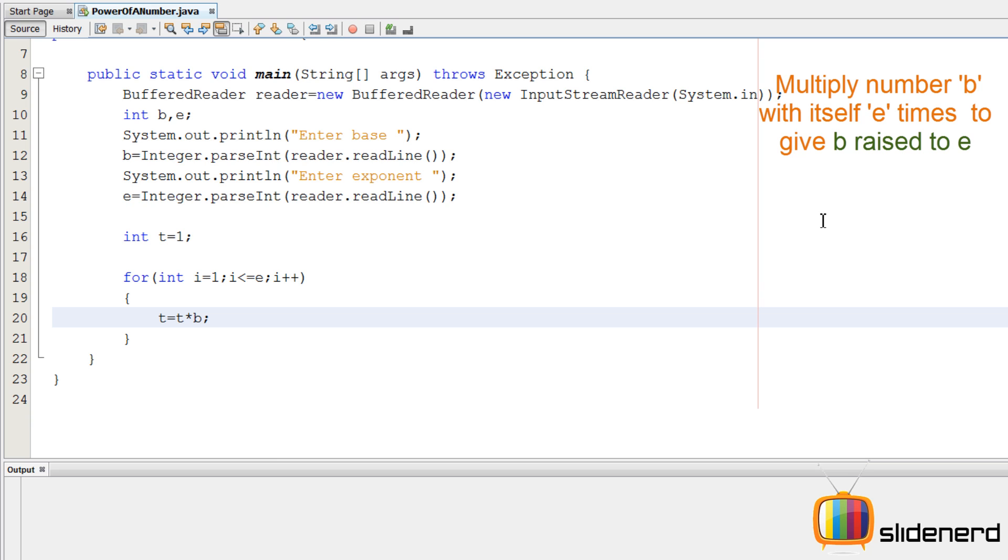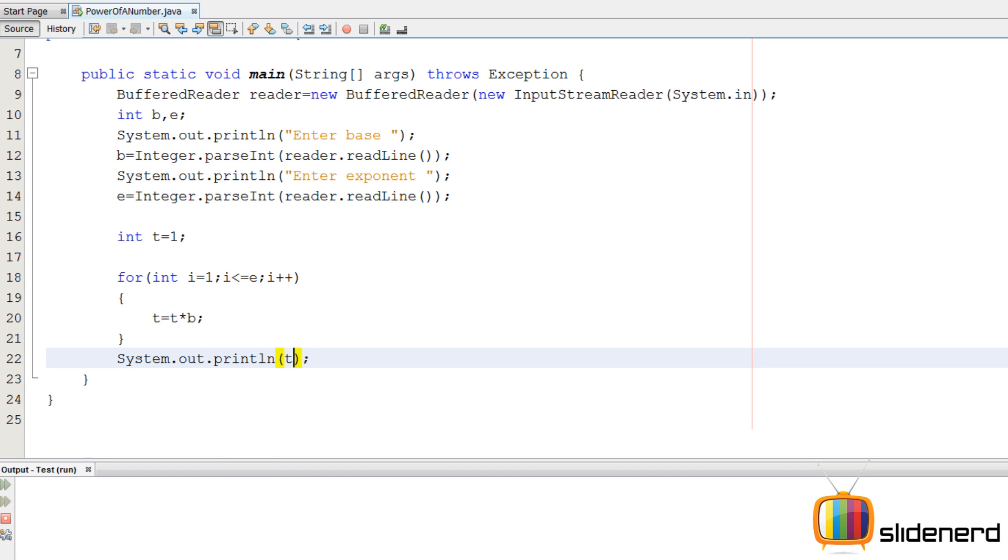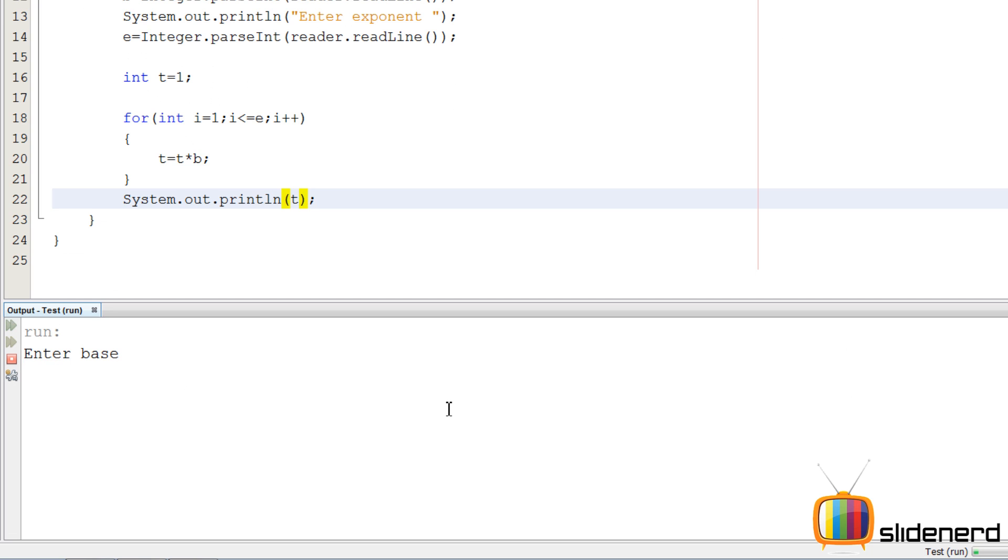Then I write t is t into b, which is t is t into number, as per the presentation we discussed. Then I have a println statement, I print t. I run this ctrl s, shift f6 on NetBeans. Enter base, I say 2. Enter exponent I say 4, it prints 16, no problems. Enter base 10, then I say enter exponent, I say 3000, it's working perfectly. So I hope you guys understood something out of this. It's a simple program, we avoided the math.power function and did it on our own using loops.